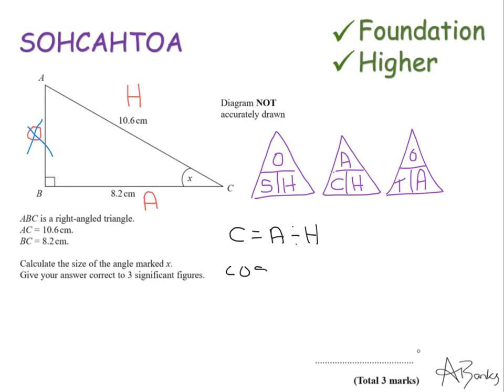So cos of, and this goes with an angle, but the angle it actually goes with is that X. So I can't put a number in here. I'm just going to have to put the X. So cos of whatever X is equals A is 8.2 divided by H, which is 10.6. I now need to find out what X is, because the question isn't asking me to find out the value of cos X. It's asking me to find out X.